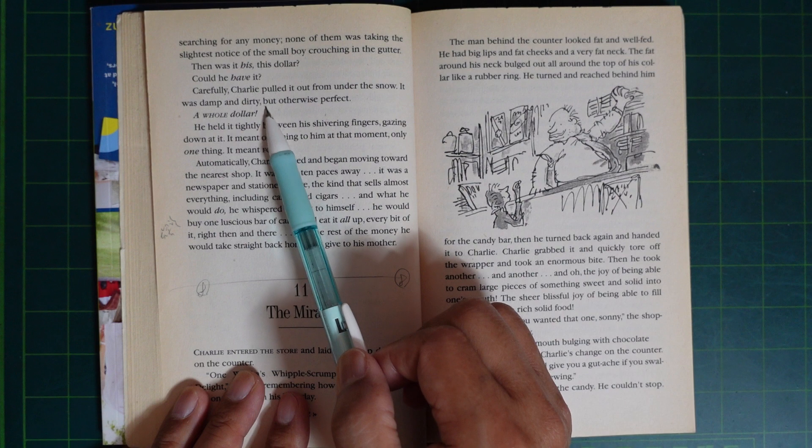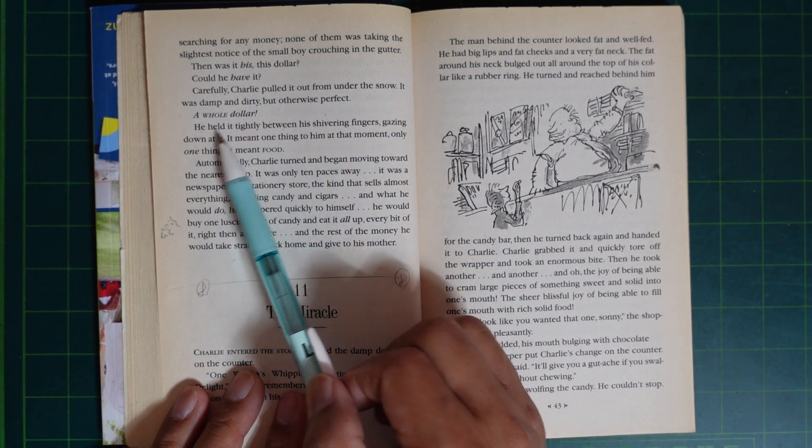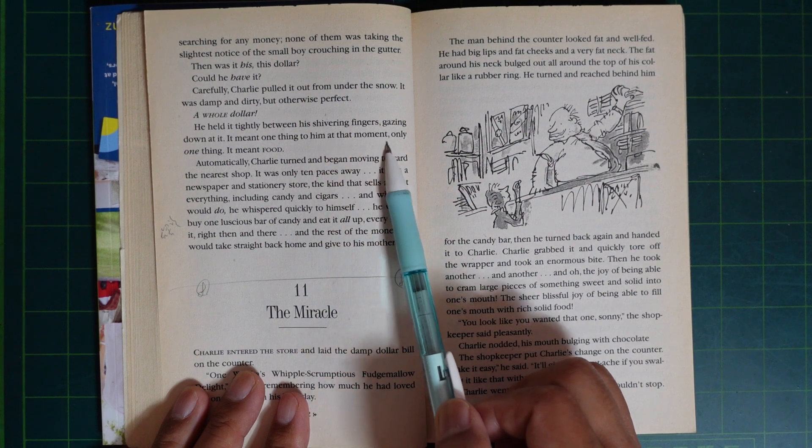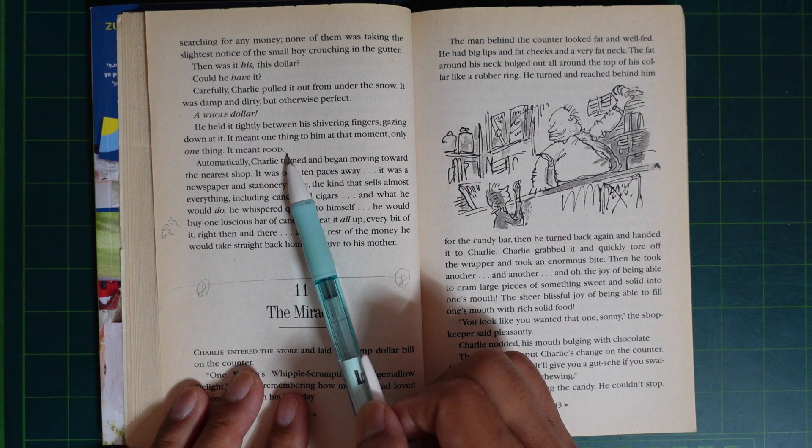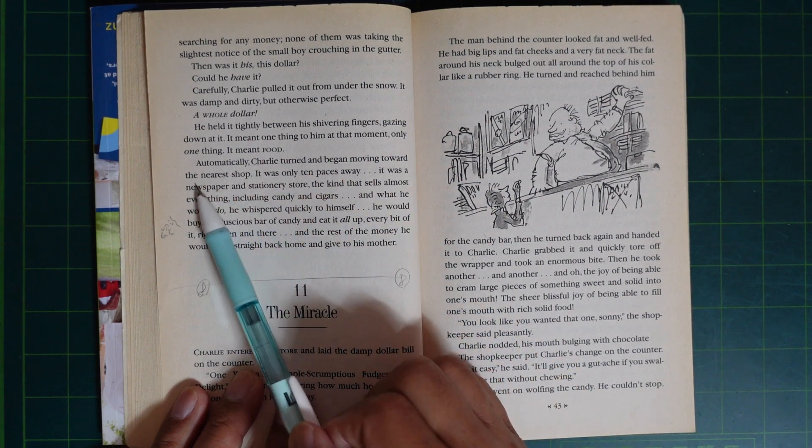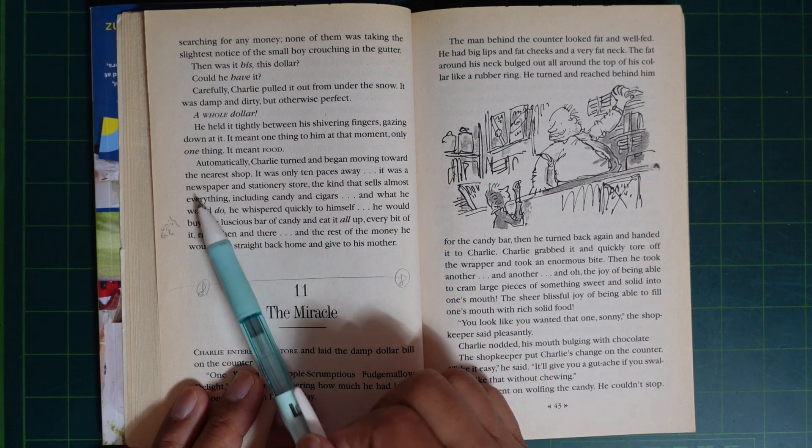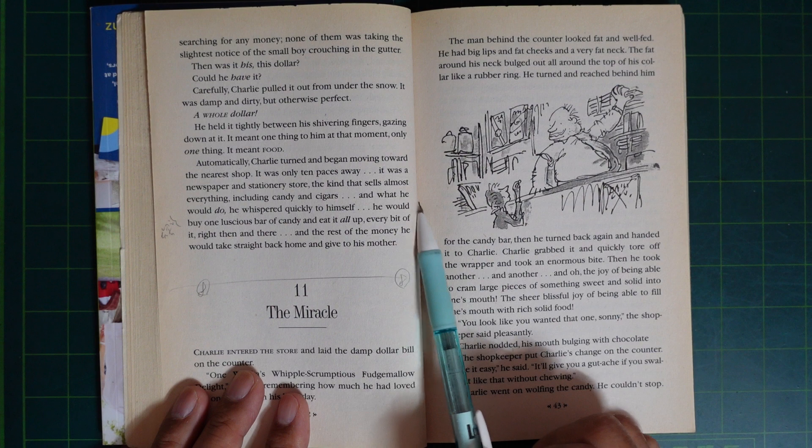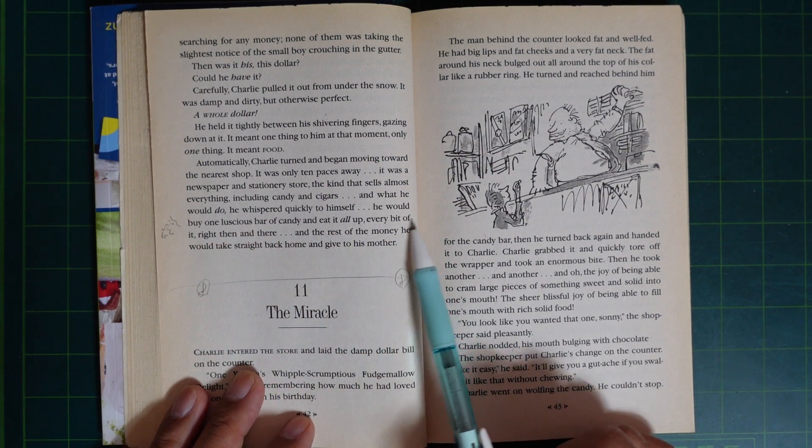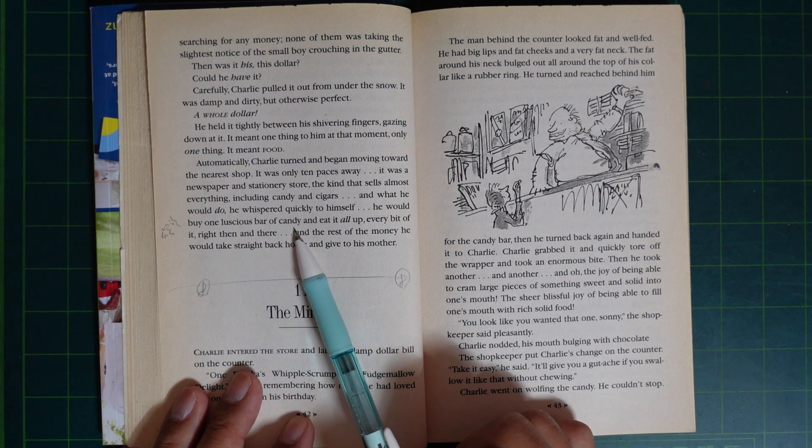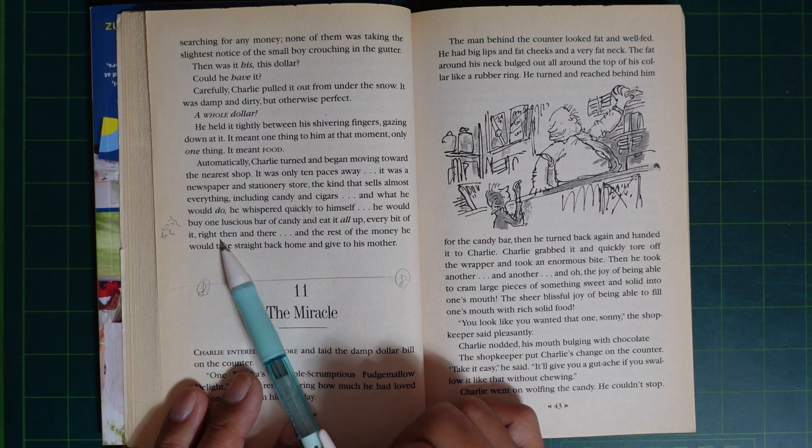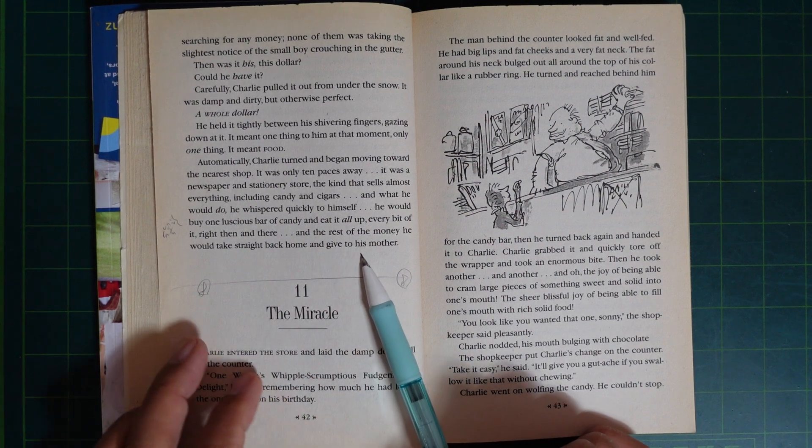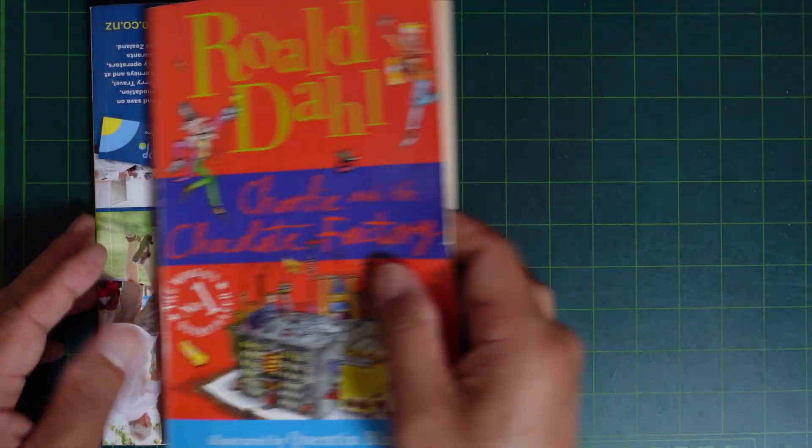Carefully, Charlie pulled it out from under the snow. It was damp and dirty, but otherwise perfect. A whole dollar. He held it tightly between his shivering fingers, gazing down at it. It meant one thing to him at that moment, only one thing. It meant food. Automatically, Charlie turned and began moving toward the nearest shop. It was only ten paces away. It was a newsagent and stationery store, the kind that sells almost everything, including candy and cigars. And what he would do, he whispered quickly to himself, he would buy one luscious bar of candy and eat all of it, every bit of it, right then and there. And the rest of the money, he would take straight back home and give to his mother.